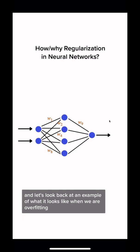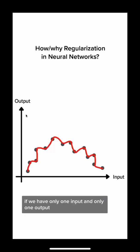Let's look back at an example of what it looks like when we are overfitting. If we have only one input and only one output, what happens is the model that we're training, the function, really closely follows what the input values are.